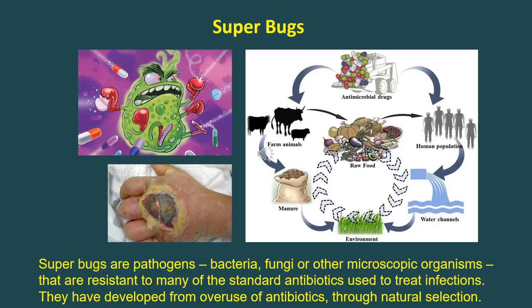Analogous to superweeds are superbugs. These are pathogens — bacteria, fungi, and other microscopic organisms — that are resistant to the standard antibiotics used to treat infections because we've used so many of them. In a sense, overuse has selected for resistant strains of those pathogens, and now we've developed these bugs that do not respond to our antibiotics and we don't have anything else we know to fight them.